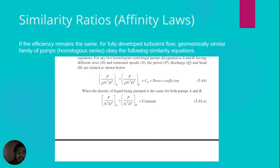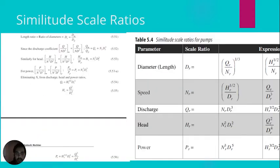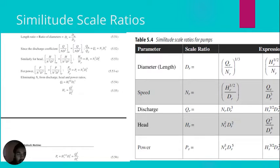We define a new feature known as similarity scale ratios. Taking a ratio r of different entities: the length ratio is the ratio of diameter D of model upon D of prototype. For the discharge or flow coefficient, Qr equals Nr·Dr³. For the head coefficient, Hr equals Nr²·Dr². For the power coefficient, Pr equals Nr³·Dr⁵.